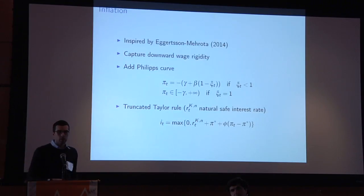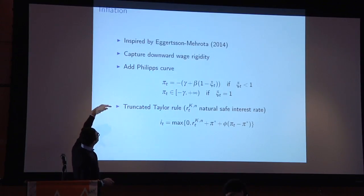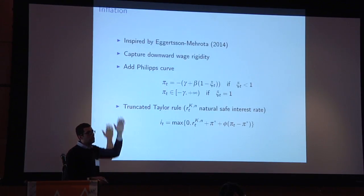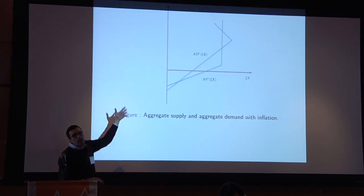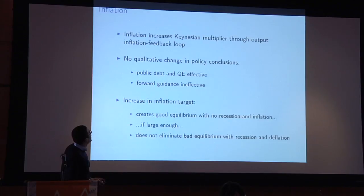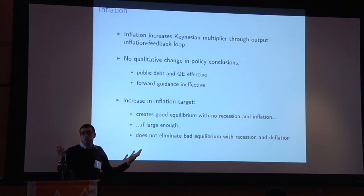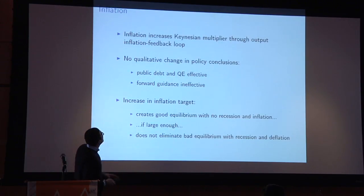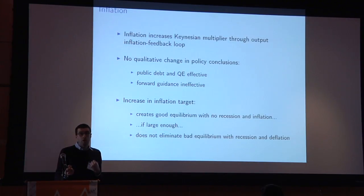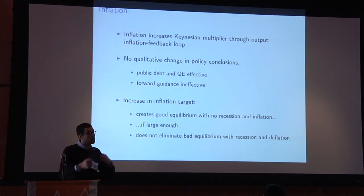On inflation: we introduce a Phillips curve that becomes vertical at some point, giving a diagram very much like the one in Gauti's paper. The bottom line is that by increasing the inflation target you can create a good equilibrium that eliminates the recession — though you can't get rid of the bad equilibrium. Other than that, there's no qualitative change, but all the Keynesian multipliers get bigger because now there's a feedback loop with inflation: stimulate output, increase inflation, which stimulates output even further.